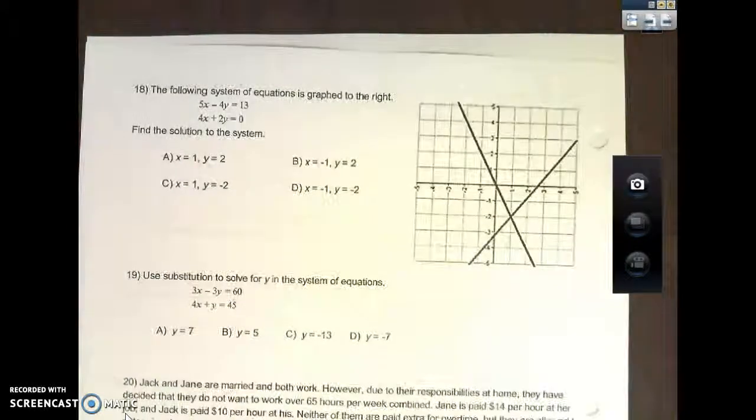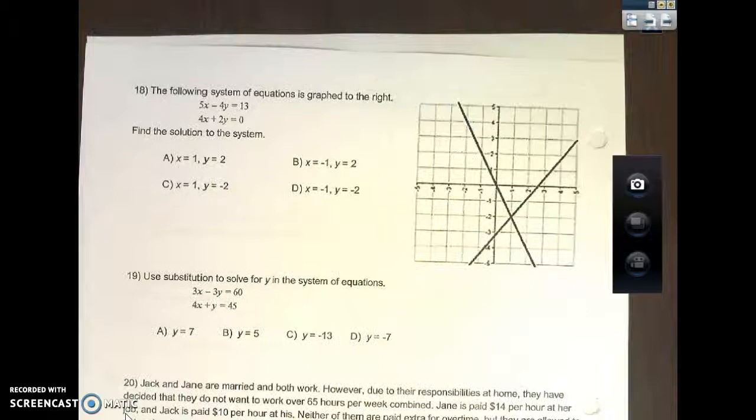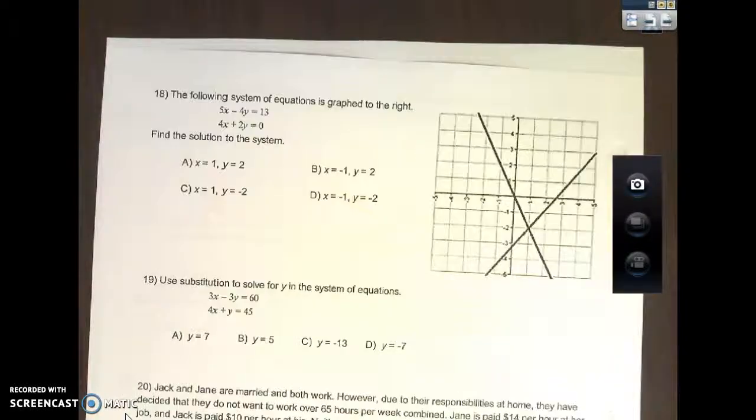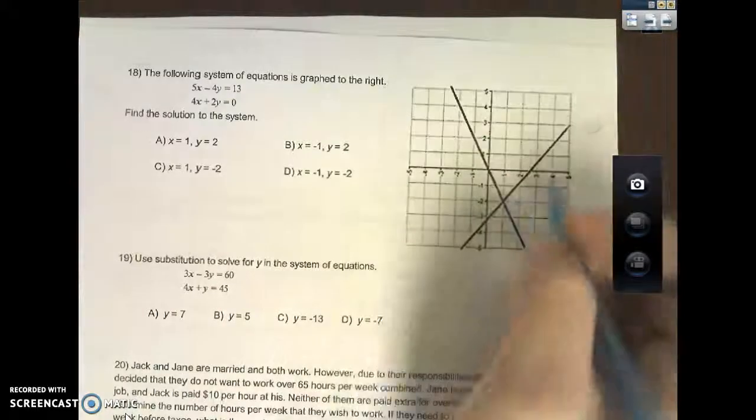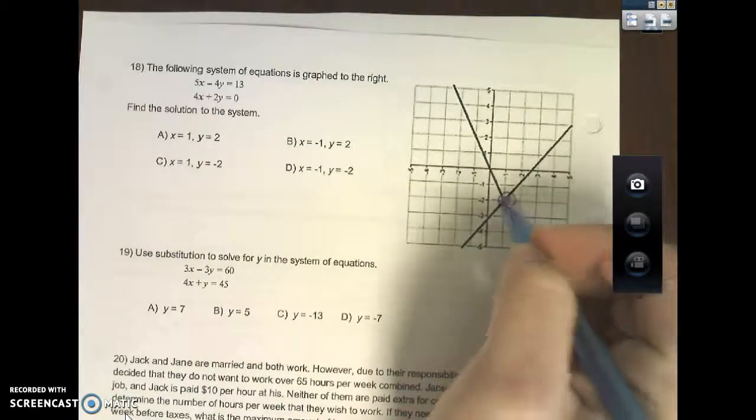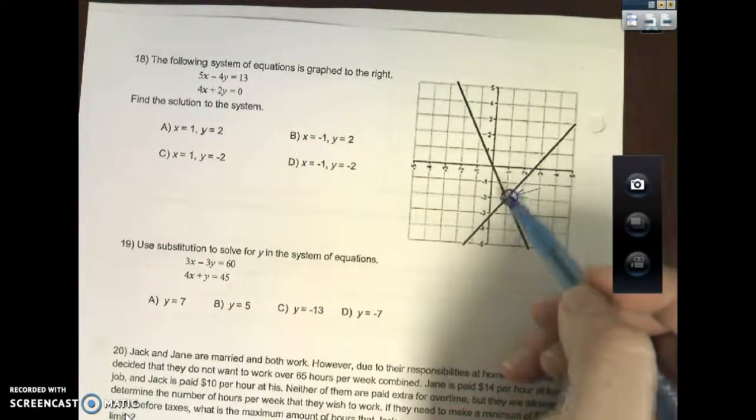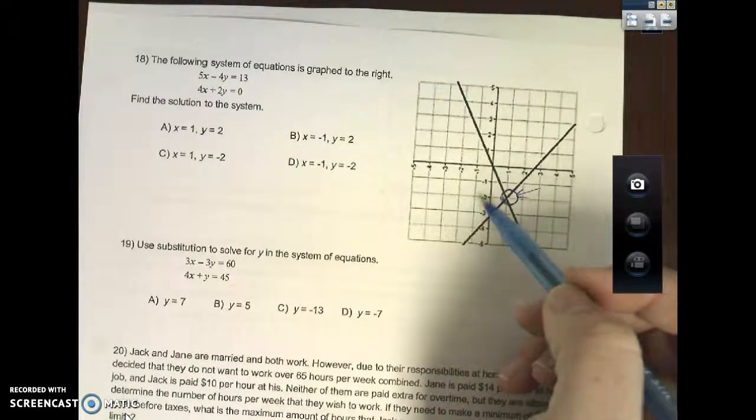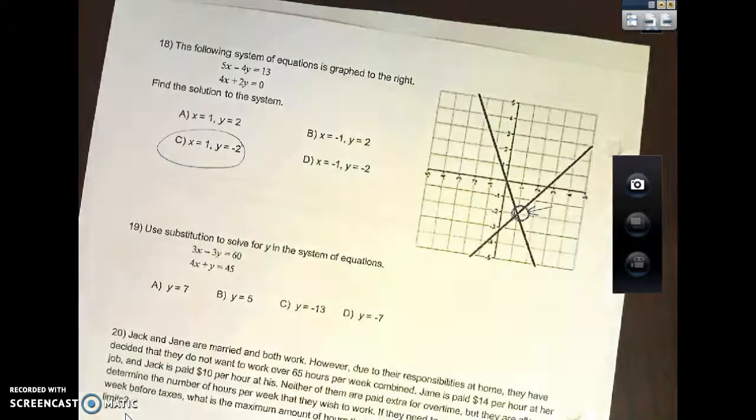The following systems of equations graphed to the right: 5x - 4y = 13, and 4x + 2y = 0. Find the solution to the system. Well, when you have a system graphed like this, it's just x marks the spot. What is this point right here? The point is to the right one, down 2. x is 1, y is negative 2. C.